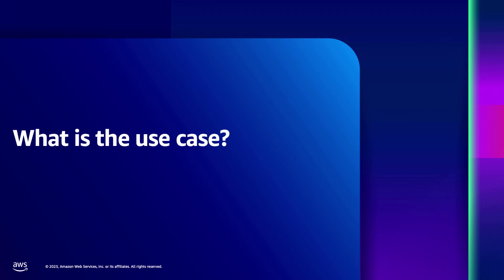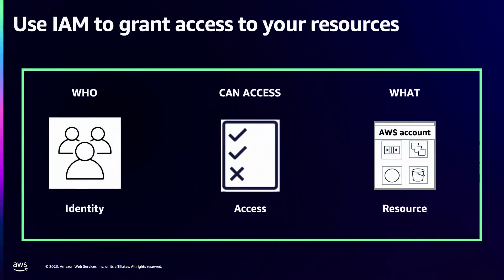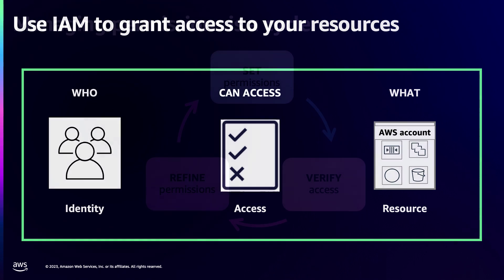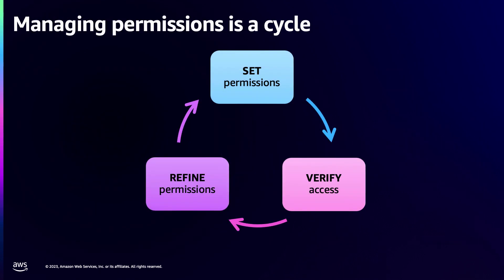So what do these two personas want to do? Bob wants to ensure that the application functions. Sarah wants to definitively answer who can access what. This is a very point-in-time representation of how folks manage permissions. As teams change and workloads evolve, the process of managing permissions is actually a cycle — more of a journey across setting, verifying, and refining permissions.